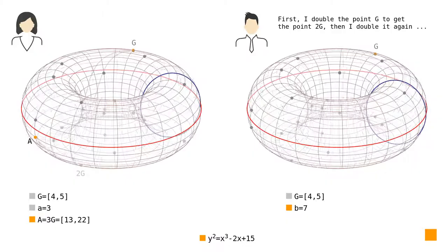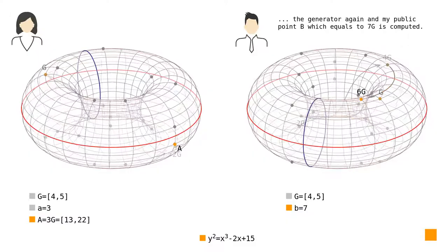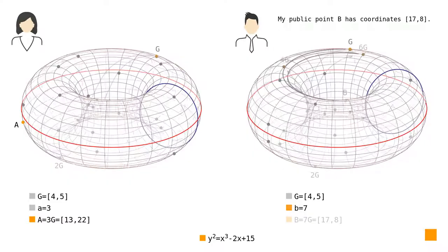First, I double the point G to get the point 2G. Then I double it again to get the point 4G. Now I sum the points 4G and 2G to get the point 6G, to which I add the generator again, and my public point B which equals 7G is computed. My public point B has coordinates (17, 8).